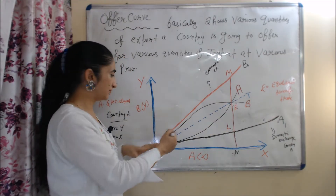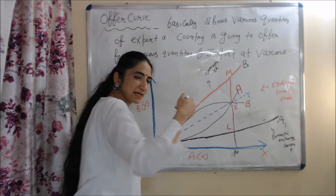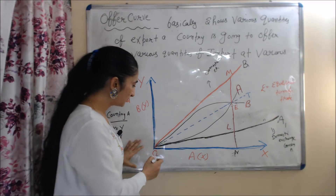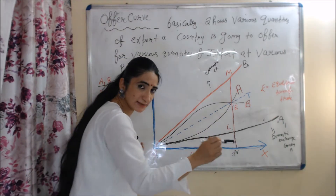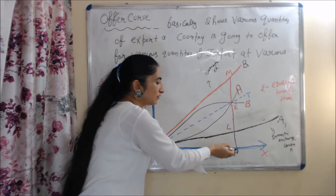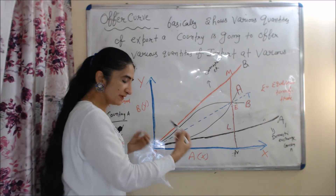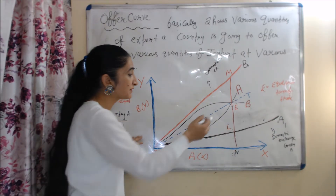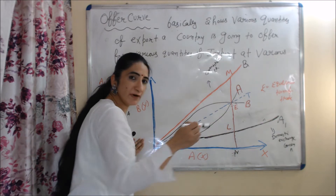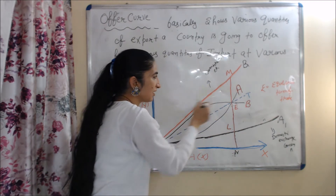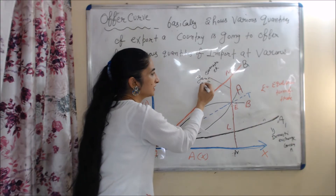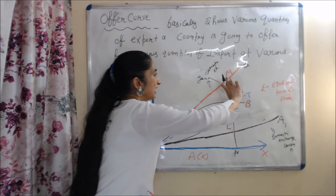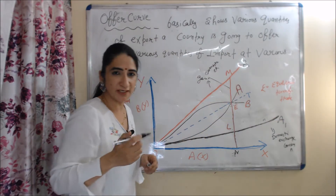Now we talk about country B. OB1 is the domestic exchange rate line of country B. Before trade, if country B wants to produce ON amount of X, it has to give up ME amount of Y. But after trade, country B is receiving ON amount of X, and in return it has to give only AE amount of Y. So ME is the gain of country B after trade. To summarize: EL is gain of country A, and ML is gain of country B after trade.